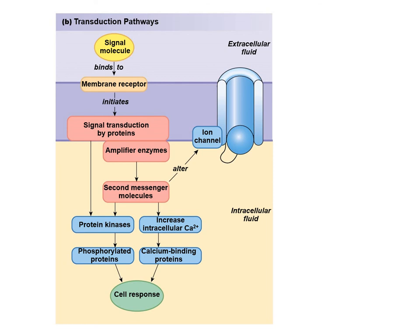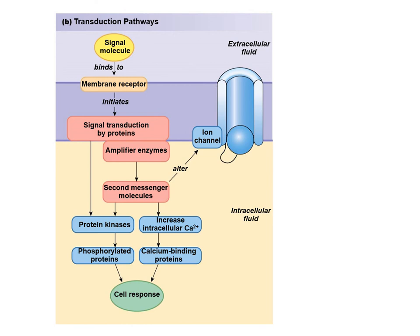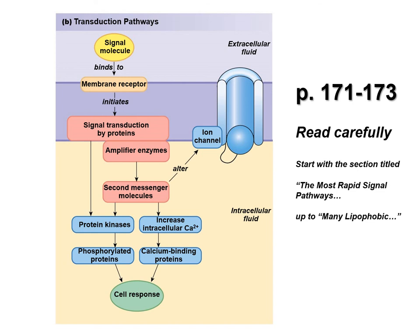Here's just an example of a second message - if we create cyclic AMP we're on our way. For reading purposes, please read carefully pages 171 through 173. Start with the section titled 'most rapid signal pathways' and 'rapid cytosolic pathways,' up to but not including the section on lipophilic signals. Read that carefully and take good notes because that's really the essence of what this figure is trying to show you - putting all the pieces together. We started with the pieces, talked about examples, and now we're putting them all together.